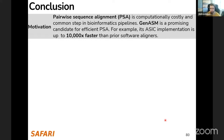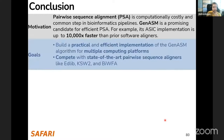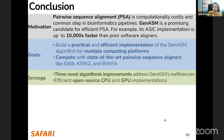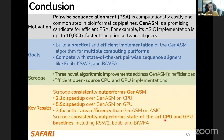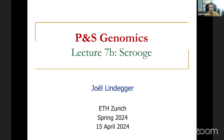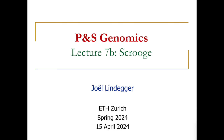In conclusion: pairwise sequence alignment is computationally costly and a common step in bioinformatics pipelines. GenASM is a prior promising algorithm for efficient pairwise sequence alignment. Our goal was to build a practical and efficient implementation of the GenASM algorithm for multiple computing platforms and compete with state-of-the-art aligners. To this end, SCROOGE includes three novel algorithmic improvements addressing GenASM's inefficiencies, with efficient open-source CPU and GPU implementations. SCROOGE consistently outperforms GenASM by 2.1x on CPU and 5.9x on GPU, and achieves 3.6x area efficiency as an ASIC, while also outperforming state-of-the-art baselines including CaseW2, Edlib, and BiWFA.